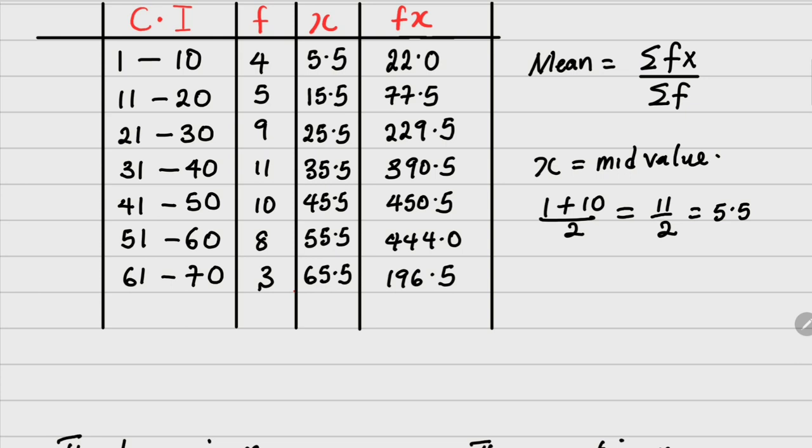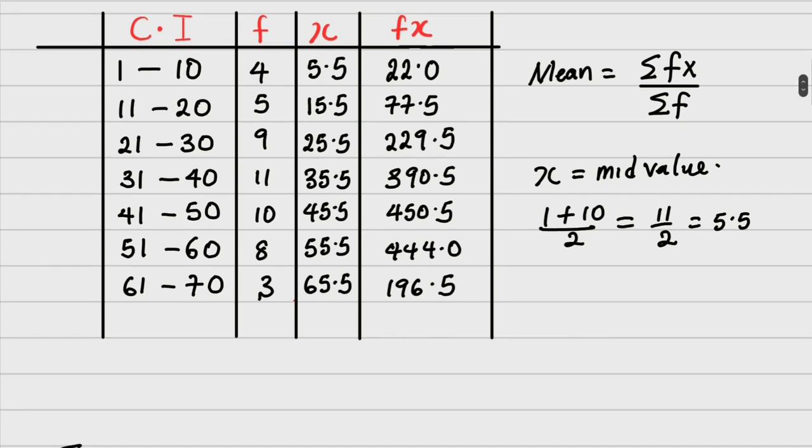But don't forget, we said the mean is summation fx over summation f. Therefore, what we need to do now is find summation f and summation fx. Adding this with calculator, we have 50 as our answer. Then adding this with calculator, we have 1810. The mean will be summation fx is 1810 over summation f, which is 50. This gives us answer as 36.2.